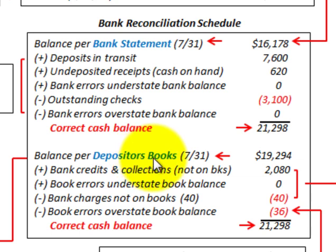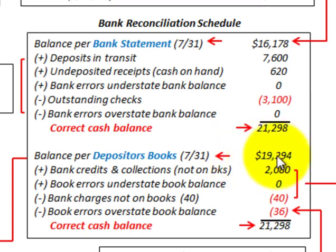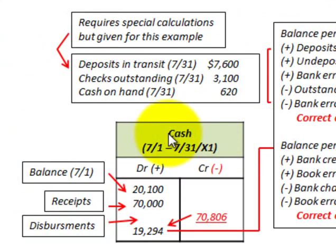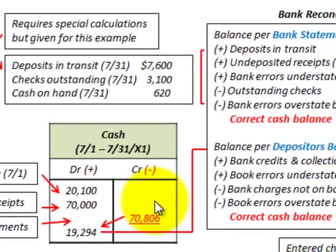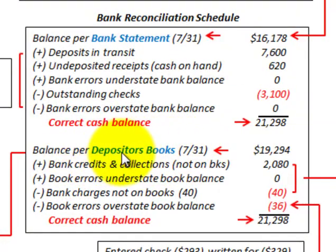Now let's look at the balance per the depositor's books — also at July 31 — of $19,294. Looking at the company's cash account from July 1 through July 31: we started with a beginning balance of $20,100, had cash receipts for the month of $70,000, and made cash disbursements of $70,806. Netting these amounts gives us a cash balance of $19,294 in the cash account, which is what we put down on the depositor's books side.